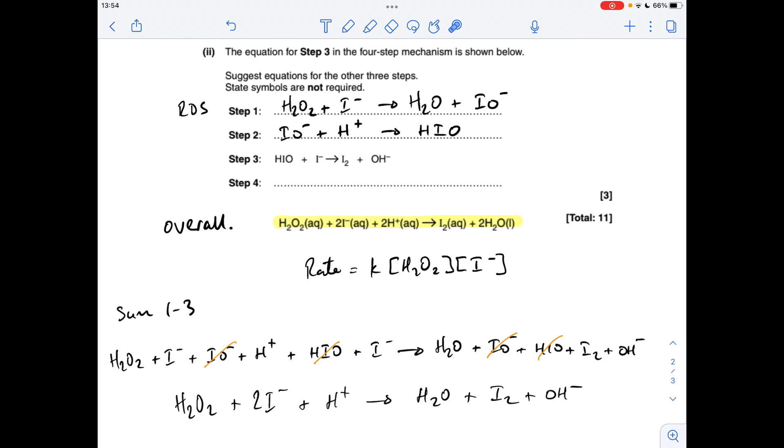So the sum of steps one to three give us, that's the full thing. And then I've cancelled out the common term. So we've got that left. So what's missing? Well, we need another H+. We also need to cancel this OH-. And we're missing an H2O. So we've only got one. We need two. So that is the answer for step 4.